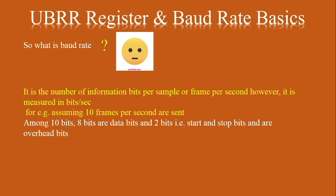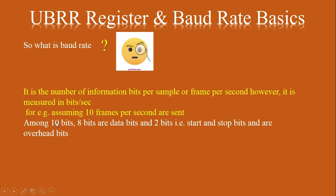For example, if we assume that 10 frames are sent per second, we will calculate the baud rate. As we already know, each frame contains two redundant bits — one start bit and one stop bit — and eight data bits. So a single frame consists of 10 bits total, with 8 data bits being the standard size.